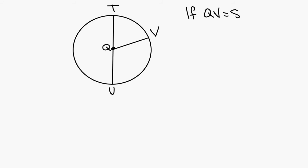The question says if QV equals 8, what is the diameter? That's your question. If Q to V is 8, so this piece right here is 8, that's the radius. If Q to V is 8, how far is it from T to U? T to U equals 16. Good. Twice the radius.